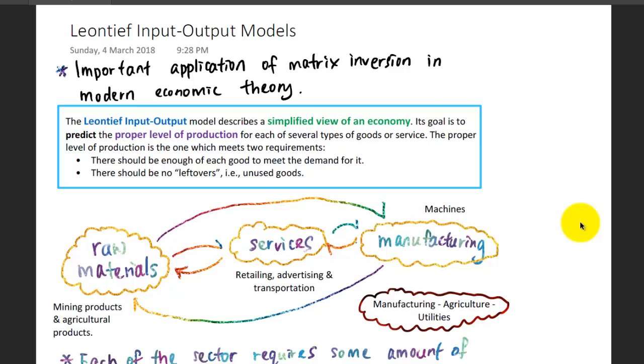One important application of matrix inversion is in Modern Economic Theory, which is the Leontief Input-Output Model. This model describes a simplified view of an economy.